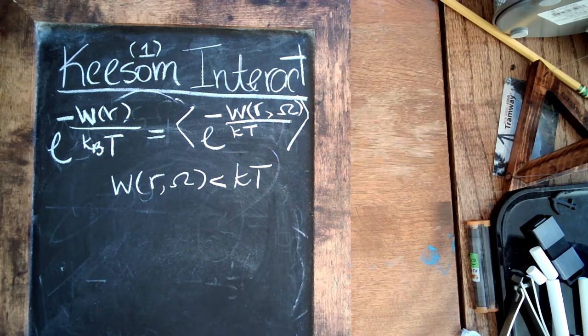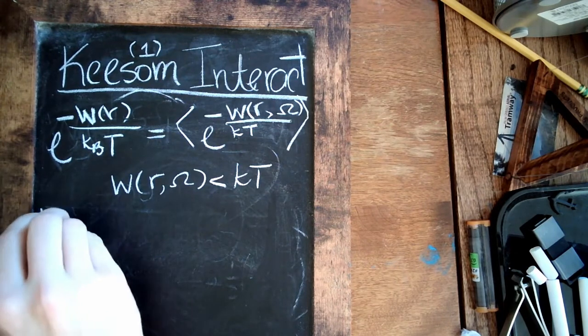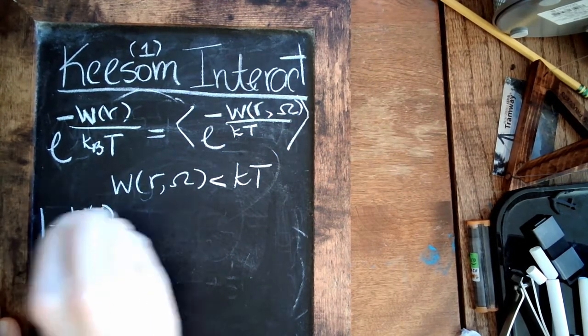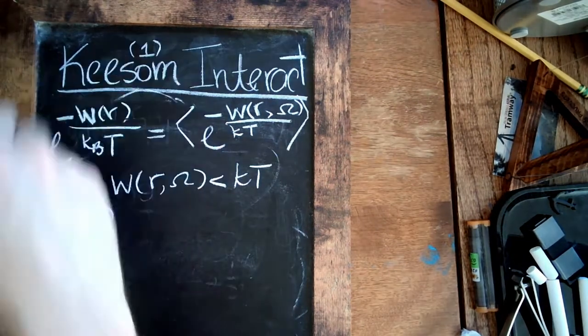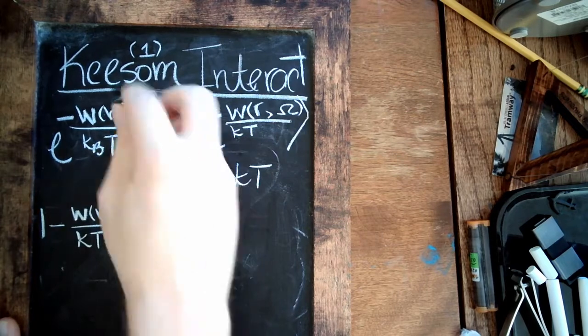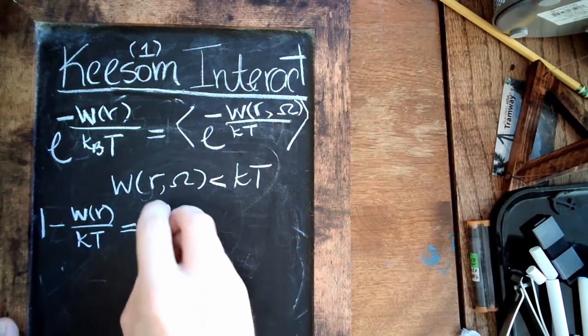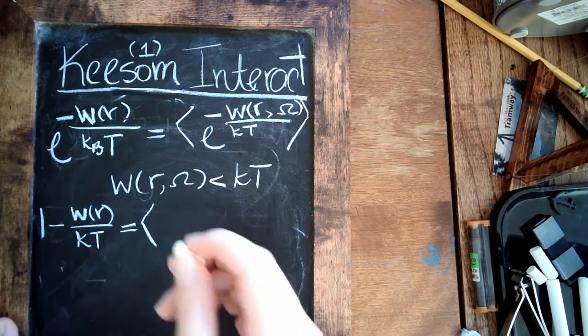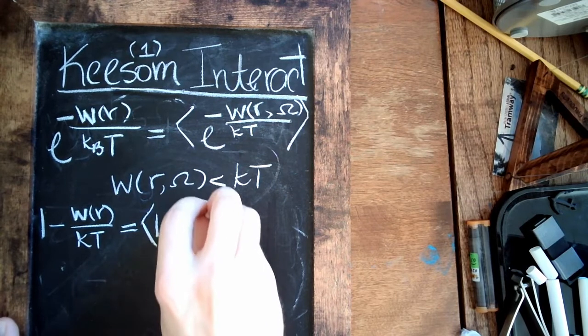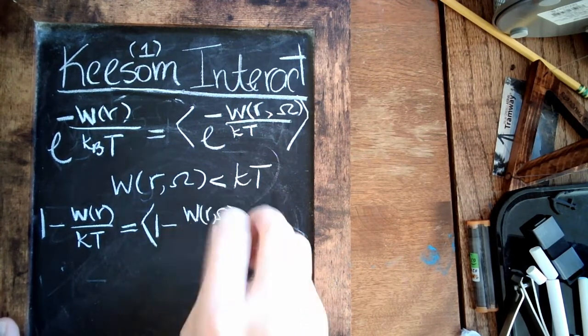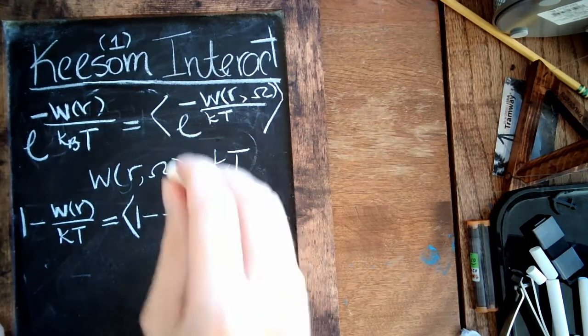So expanding this side, we would get 1 minus W(r) over kT. And we'll just leave it at that—that's a simple expansion of the exponential function, Taylor expansion. Take a look at the other side: we're going to maintain the average, we're going to get 1 minus W(r,omega) over kT.